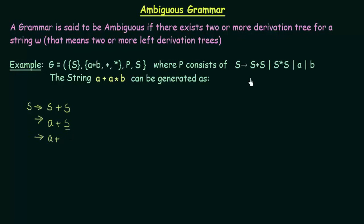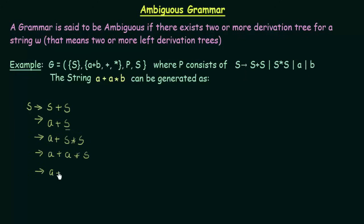I will expand this S using the production S → S*S. So this S becomes S*S, giving A plus S*S. Now I replace the leftmost S with A (since S → A), giving A plus A*S. Finally, I replace the last S with B (since S → B), giving A plus A*B. So this is one way to generate the string A plus A*B using a left derivation tree.